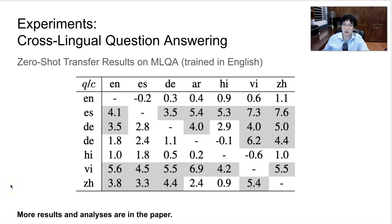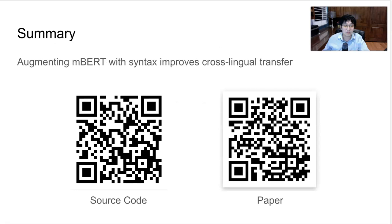In summary, we showed that augmenting multilingual BERT with syntax information using the graph attention network can significantly improve cross-lingual transfer. You can find our source code and the paper using the QR code shown here. Thank you for your attention.